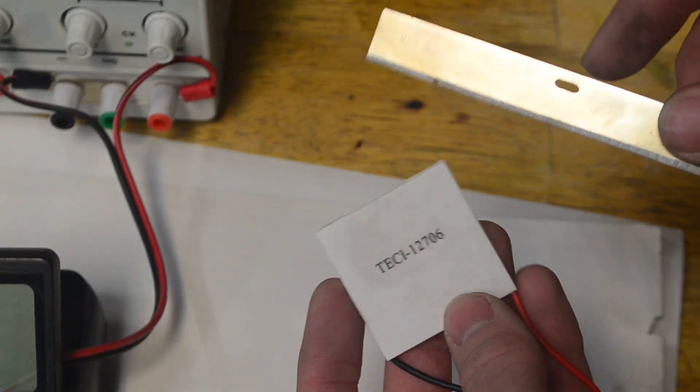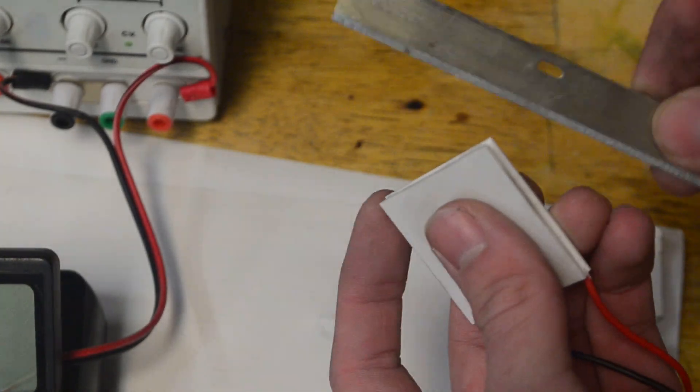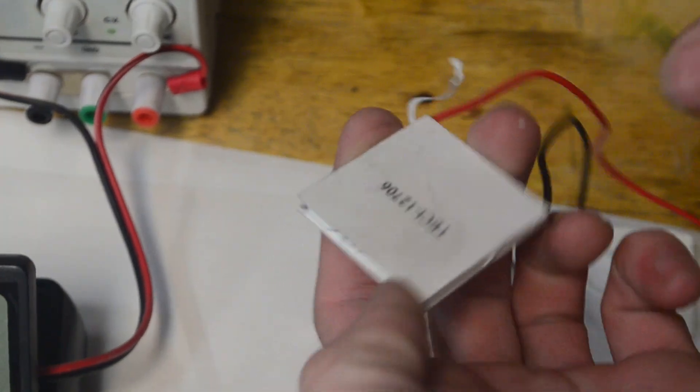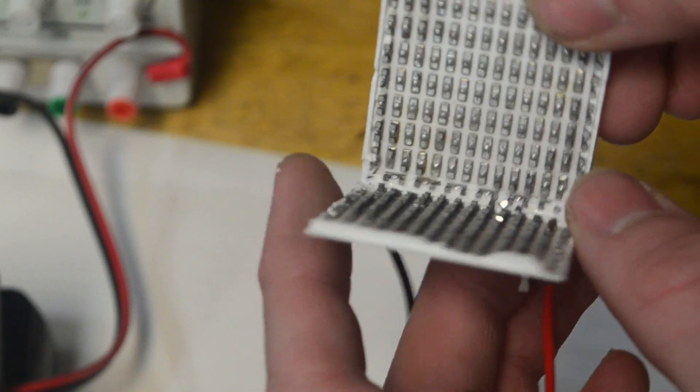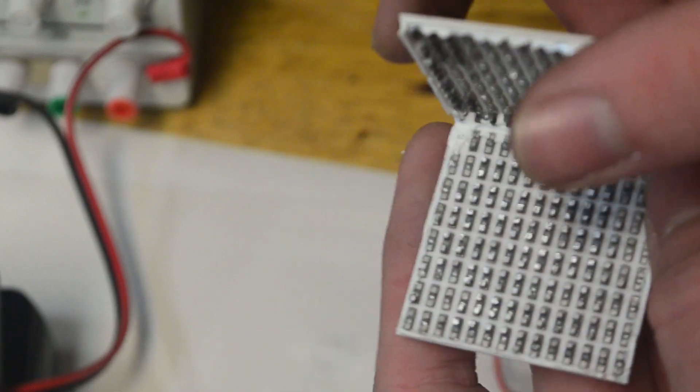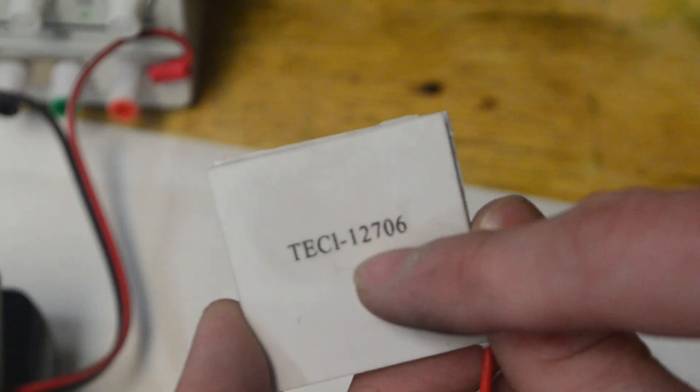Now these modules are only about $2 each, so let's go ahead and cut this open so you guys can see what's on the inside. I removed enough of the rubber, so let's go ahead and peel it open. As you can see inside of this, there are plenty of those little cells. In fact, the exact number of cells are shown on the outside of the module, and that appears to be 127.